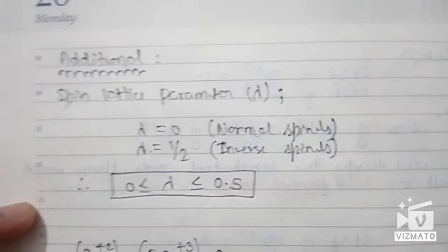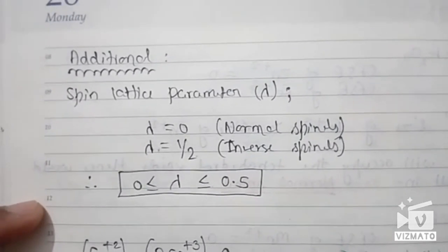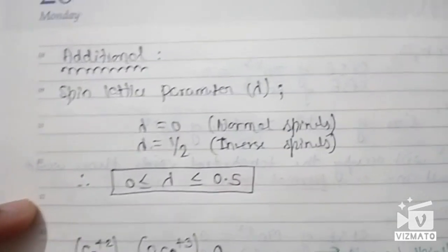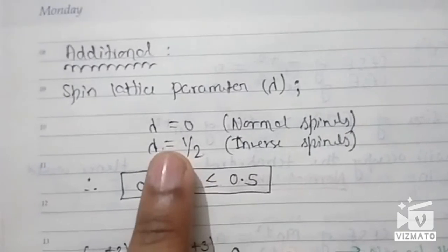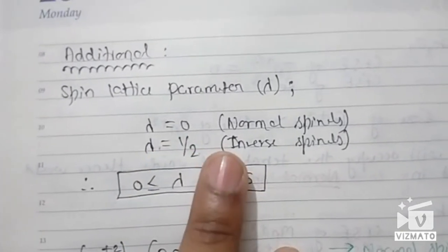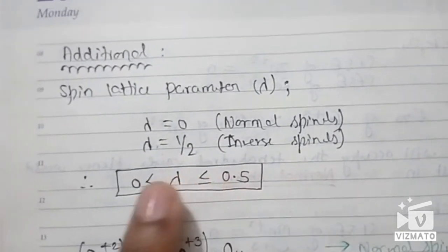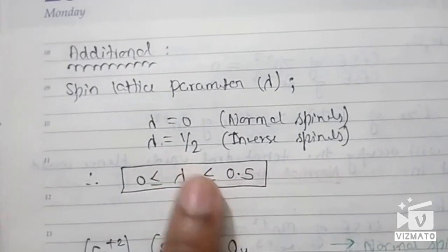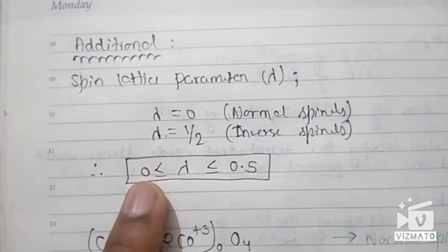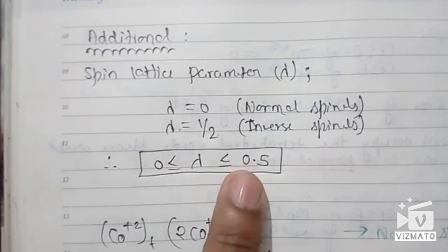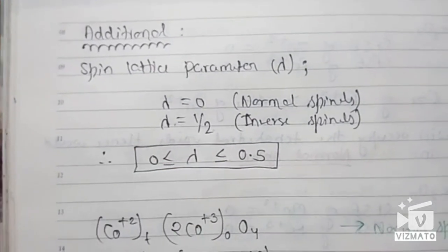Some additional information: in some previous year questions, a question was asked about the spinel inversion parameter (denoted by λ). For normal spinels the inversion parameter is 0, and for inverse spinels the inversion parameter is 1. The value of λ is between 0 and 1.